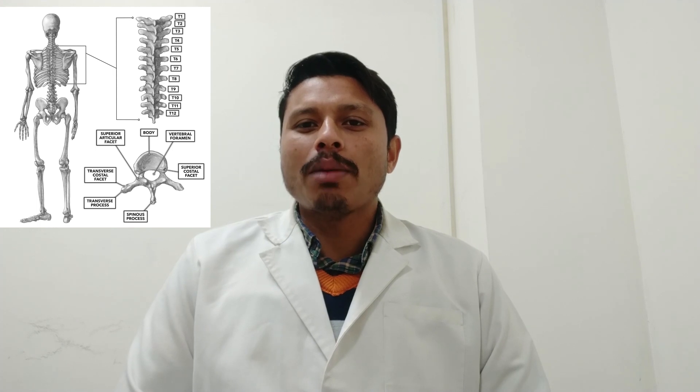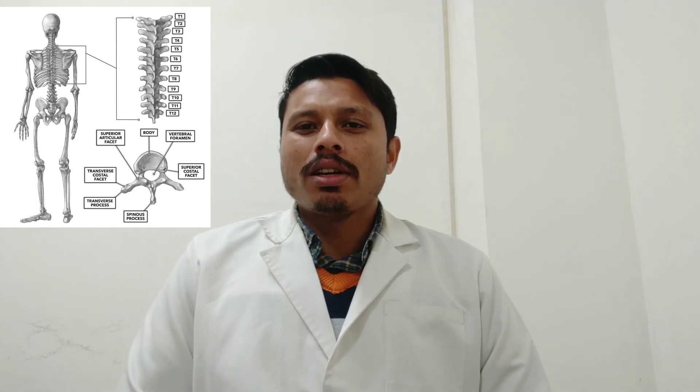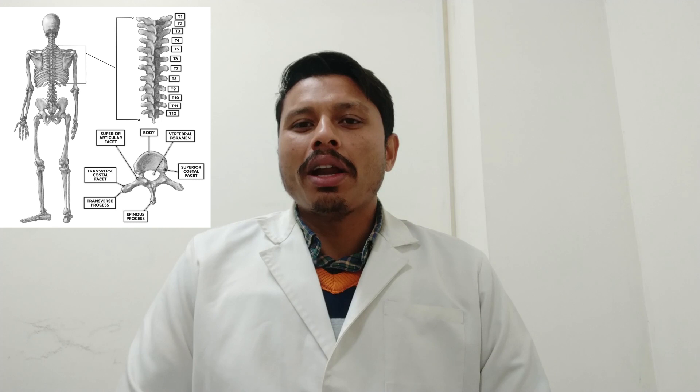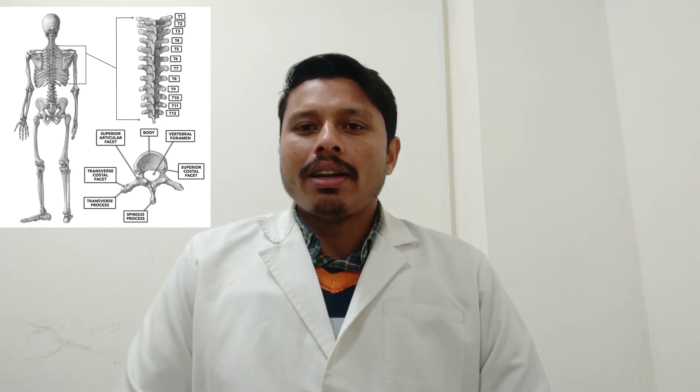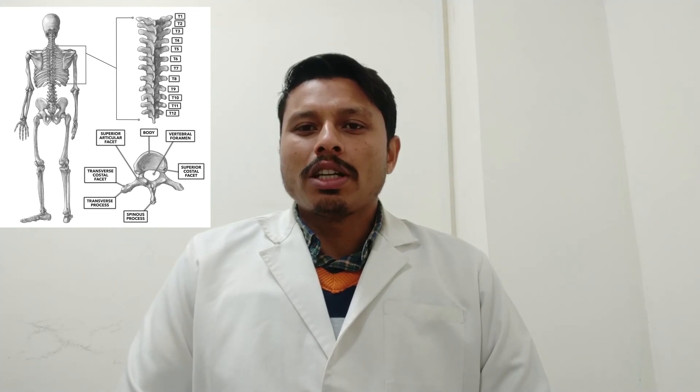In the thoracic region we have 12 thoracic vertebrae, in which the 2nd to 8th are typical type of thoracic vertebrae, and the 1st, 9th, 10th, 11th and 12th thoracic vertebrae are atypical type of thoracic vertebrae.